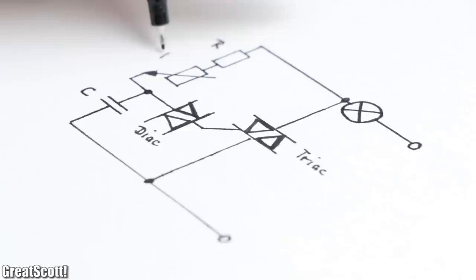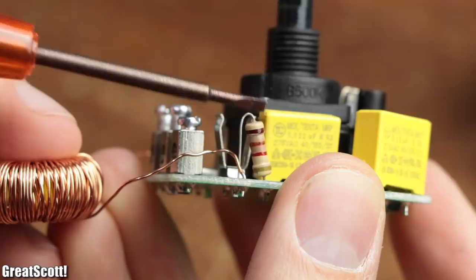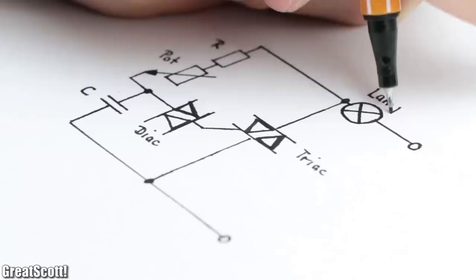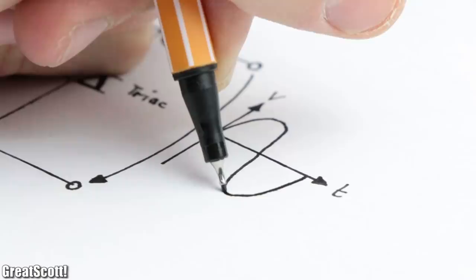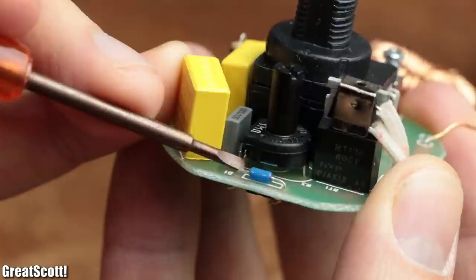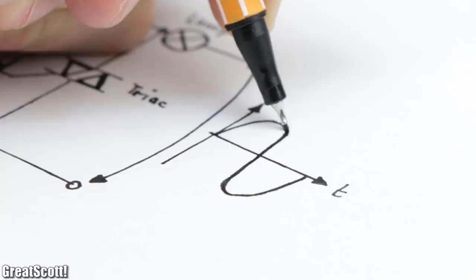If we reduce the component count to only the mandatory ones then the schematic for the circuit would look something like this, with a resistor, potentiometer, capacitor, diac and triac.